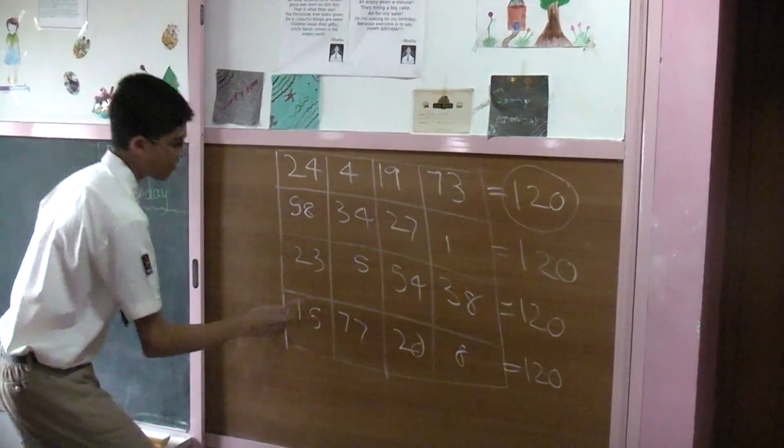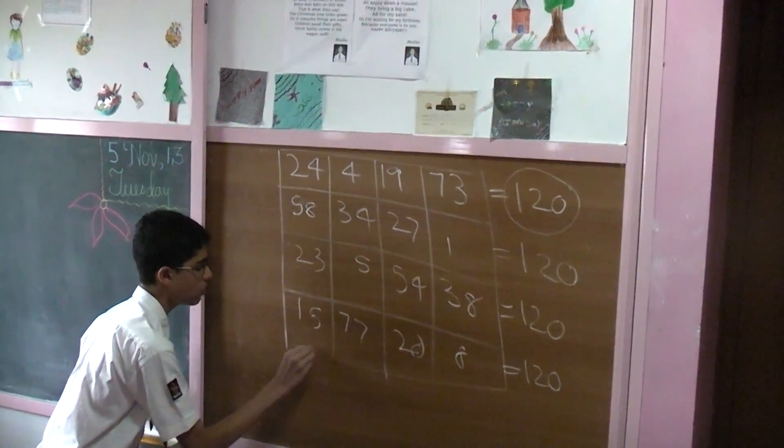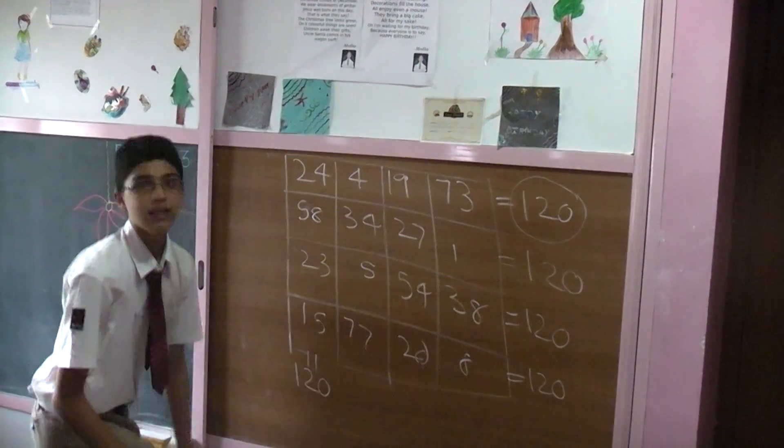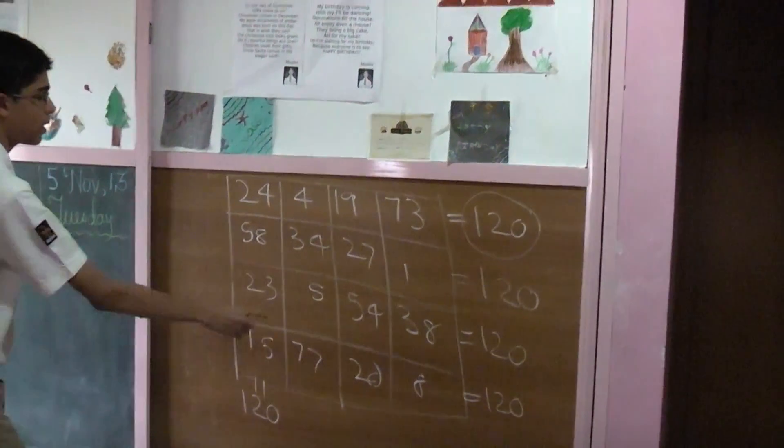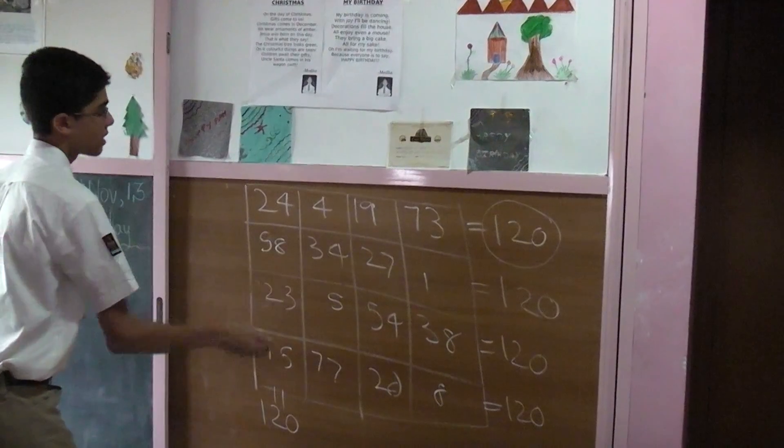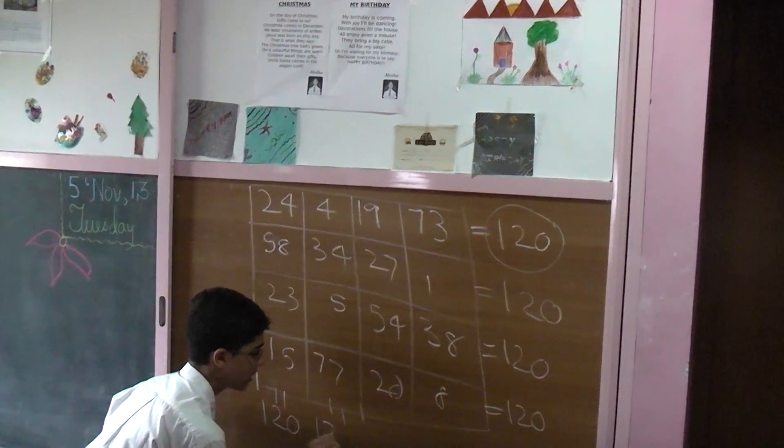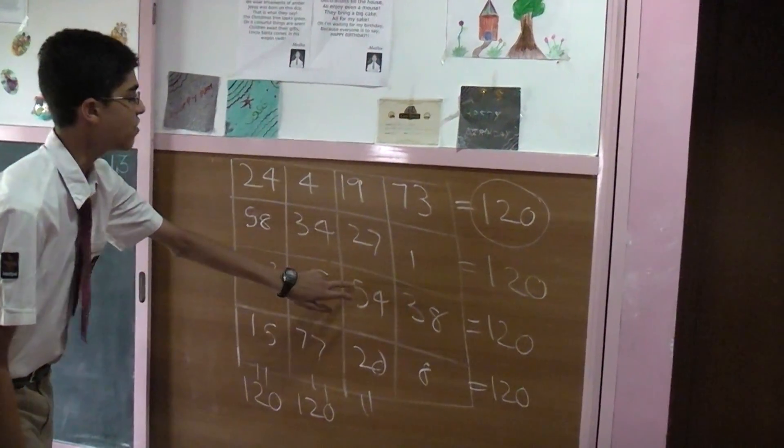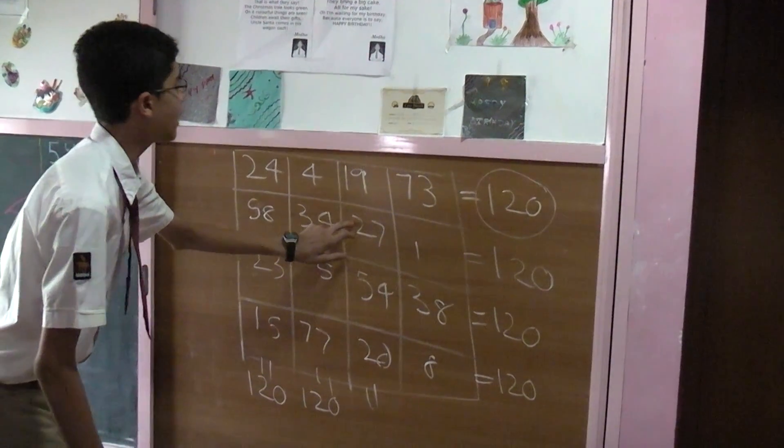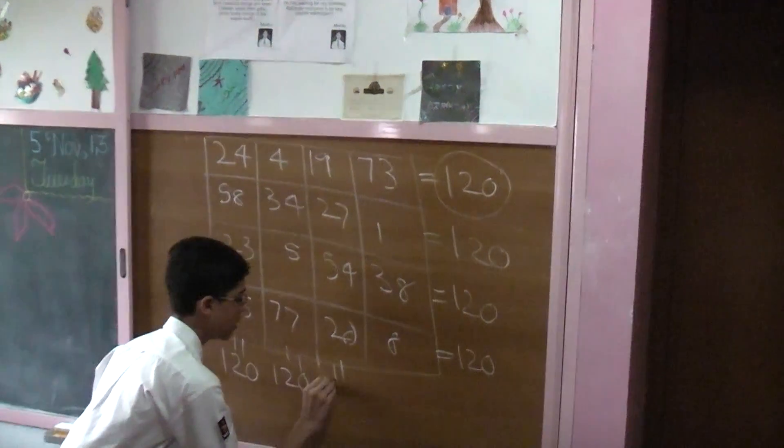62 plus 23 is 95 plus 15 is also 120. 77 plus 5 is 82, 82 plus 4 is 86 plus 34 also is 120. Here, you get 20, 74, 101 and 120.